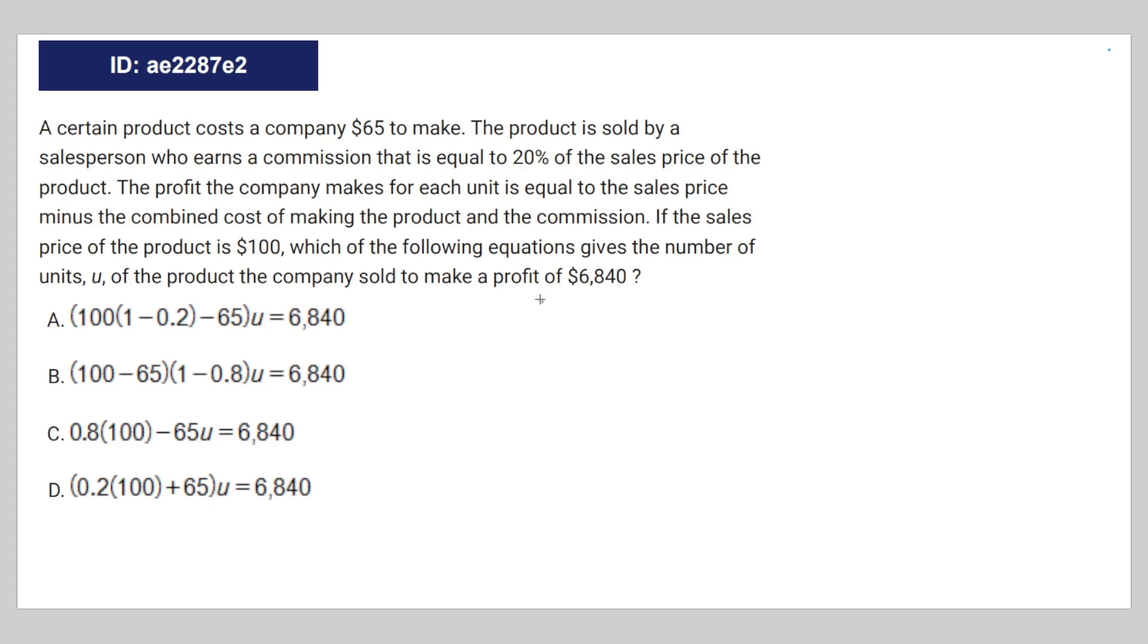The profit the company makes for each unit is equal to the sales price minus the combined cost of making the product and the commission. If the sales price of the product is $100, which of the following equation gives the number of units, U, the product the company sold, to make a profit of $6,840?